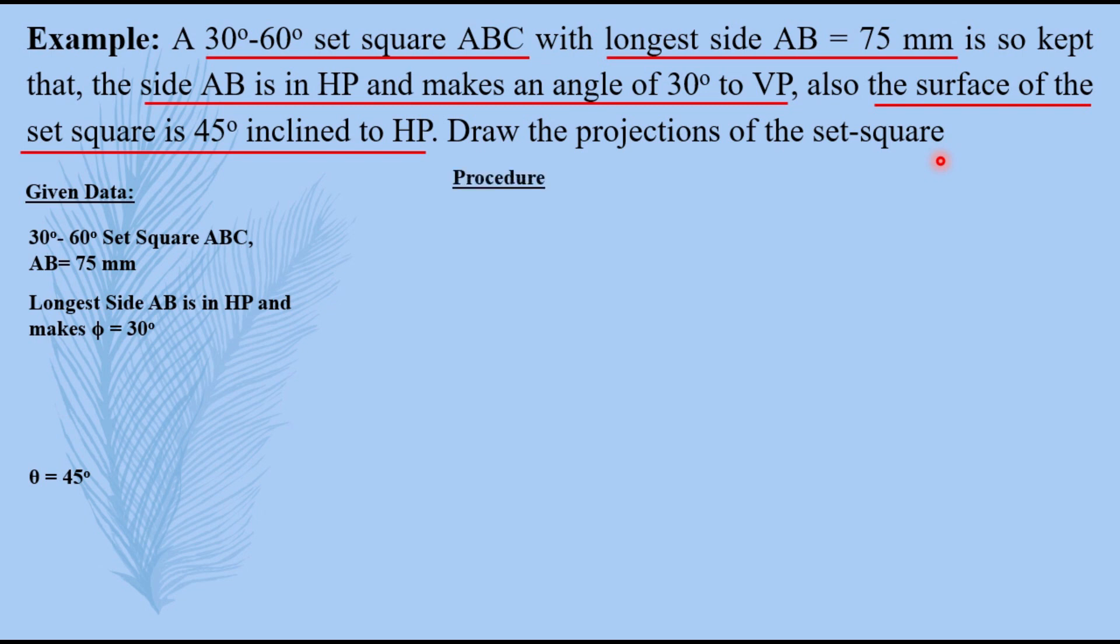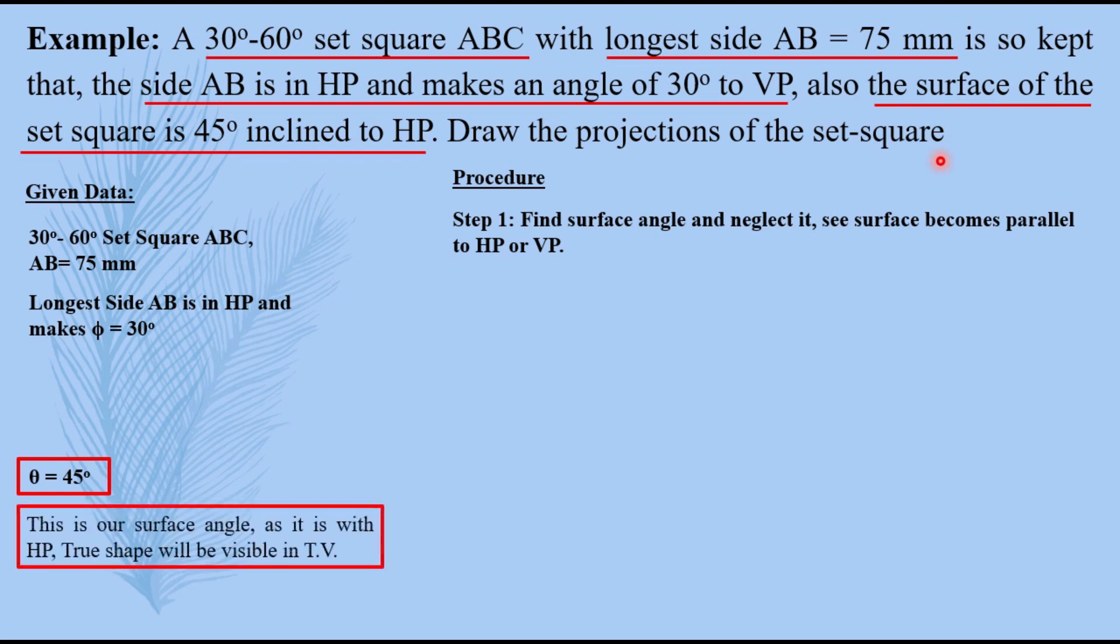Now let us revise the procedure which we have discussed in previous video. Step number one: find surface angle and neglect it so surface becomes parallel to HP or VP. This is our surface angle theta equals to 45 degrees. If you neglect this angle then the true shape will be visible in top view because the plane becomes parallel to HP.